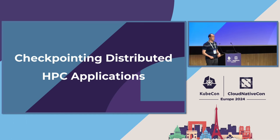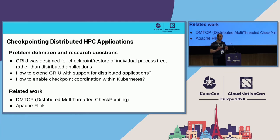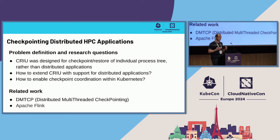HPC applications are driven by scale and performance. In order to process large amounts of data, they need to be distributed — running on multiple different servers. The HPC community has been increasingly adopting Kubernetes mainly because of the features and benefits it provides. However, the current checkpoint implementation is not able to checkpoint multiple containers at the same time. The fundamental reason is that CRIU was not designed to checkpoint distributed applications — it was designed to checkpoint a single process tree. The question is: how can we extend CRIU to support distributed applications, and how can we enable this functionality in Kubernetes?